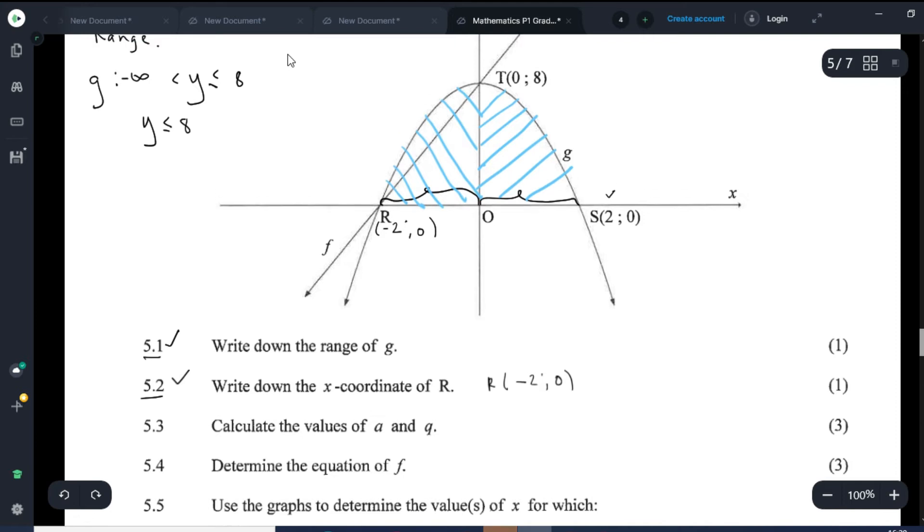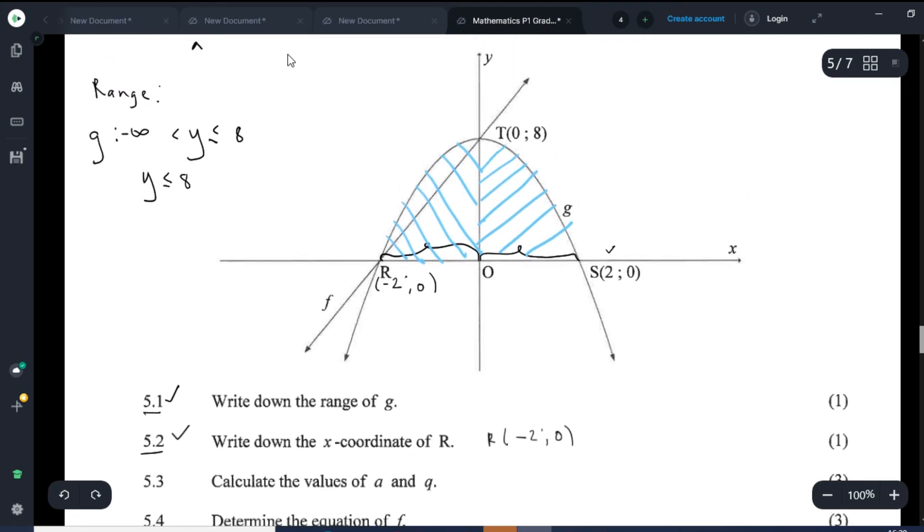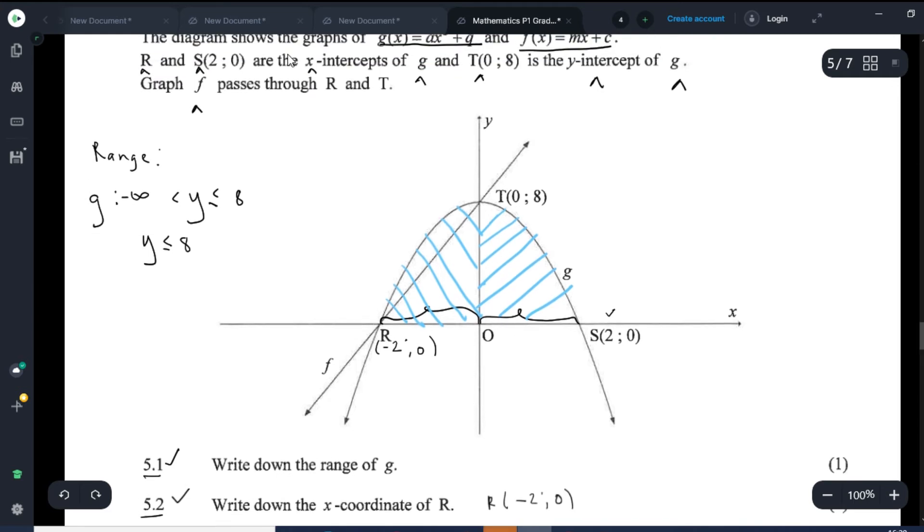Let's look at number 5.3. Calculate the values of A and Q. So in the general form, g of x equals A x squared plus Q. It's quite clear that the constant Q is the y-intercept and we are given the y-intercept that is given to us already. So the y-intercept in this case Q is 8.